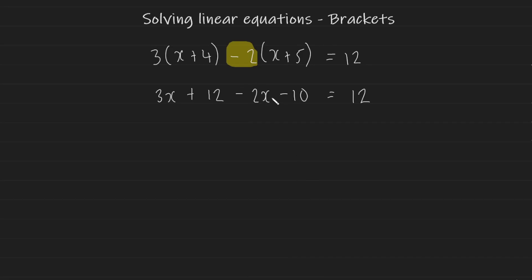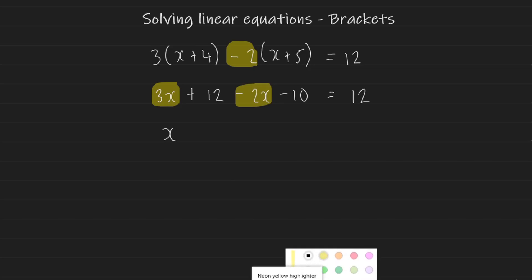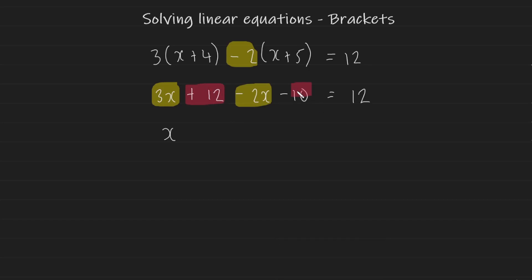Now simplify the left hand side by collecting like terms. For the variables: 3x and minus 2x — notice the symbol to the left of a term belongs to that term — so 3x minus 2x gives us x. For the numbers: plus 12 and minus 10 simplifies to positive 2. So we have x + 2 = 12.